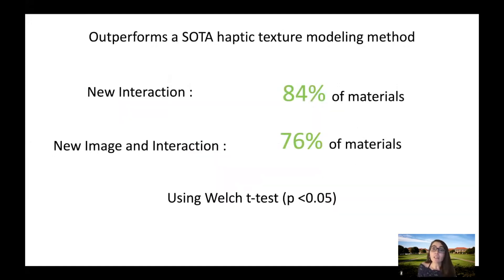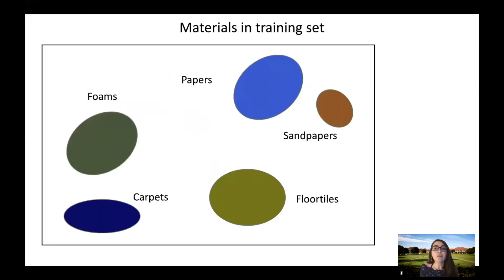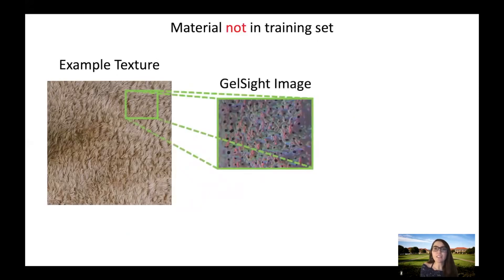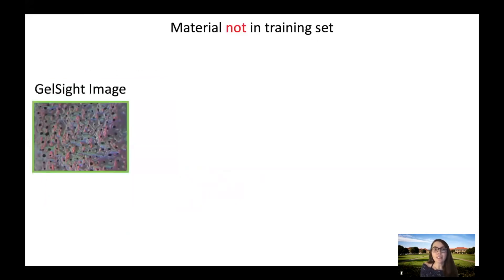We show that our model outperforms a state-of-the-art haptic texture generation method using a Welch T-test, and show that our method learns to associate materials that feel similar to each other based on their representation encoding in t-SNE space. We also provide preliminary evidence regarding our model's capability for generalizing to new materials. We do this by looking at the encoding of these textures in t-SNE space.